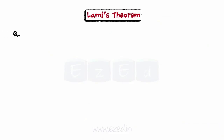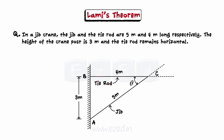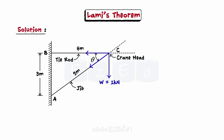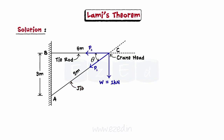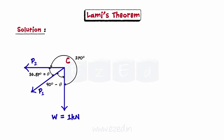Let us consider the following problem. In a jib crane, the jib and the tie rod are five meters and four meters long respectively. The height of the crane post is three meters and the tie rod remains horizontal. Determine the forces produced in the jib and tie rod when a load of one kilo Newton is suspended at the crane head. In a jib crane, three forces act along the jib, the tie rod and the load passing through one point. From the figure, sin theta equals 0.6; therefore theta equals 36.87 degrees. Let P1 and P2 be the forces developed in the jib and tie rod respectively. The three forces P1, P2 and W are shown in the figure with the angles between the forces calculated from the given directions. The line of action of forces P1, P2 and weight W meet at point C, and therefore Lamy's theorem is applicable.